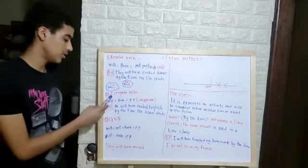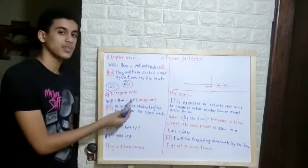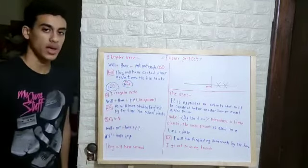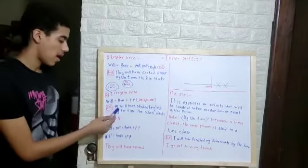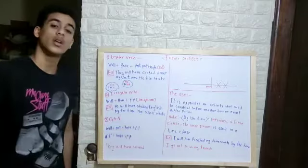Let's jump back to the second point, the irregular verbs. It's the same thing. Will plus have the past participle. But here the past participle has a unique one. Let's have an example. He will have studied English by the time the school starts.